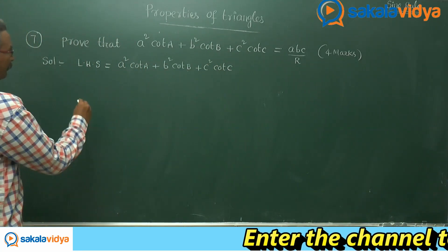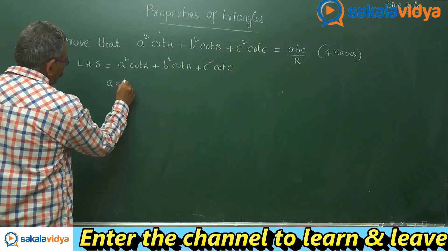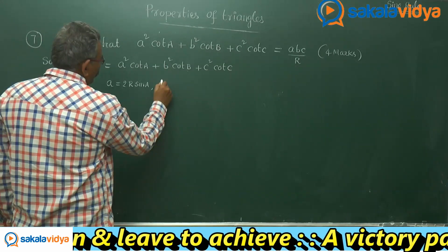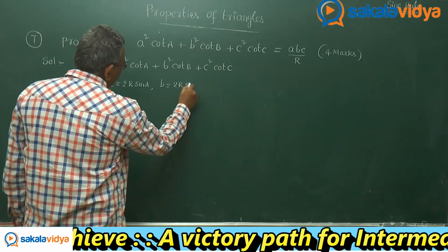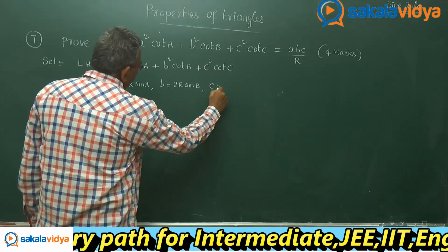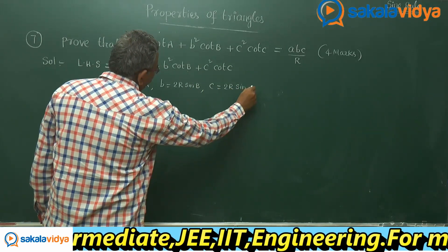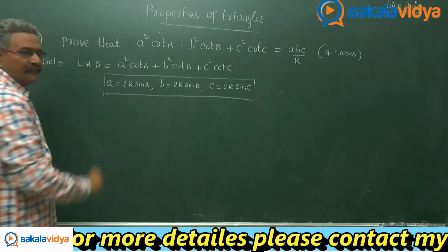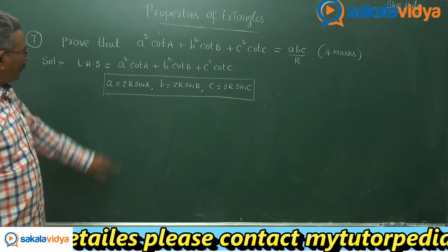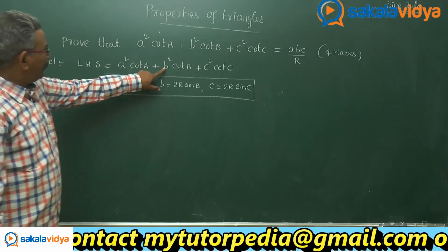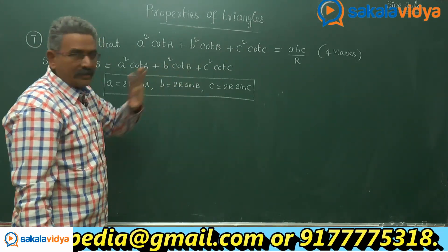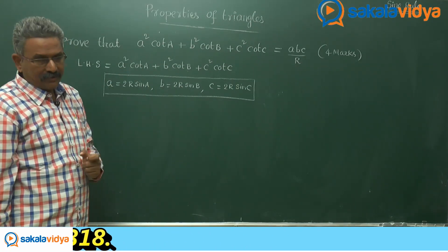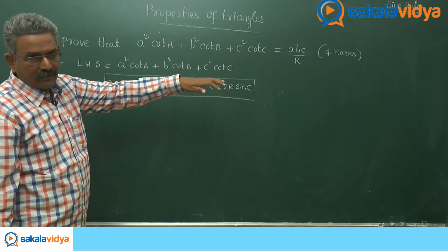We know from the sine rule that a = 2R sin A, b = 2R sin B, and c = 2R sin C. So we will substitute a with 2R sin A, b with 2R sin B, and c with 2R sin C. Also, cot A, cot B, and cot C must be written in terms of cos and sin.